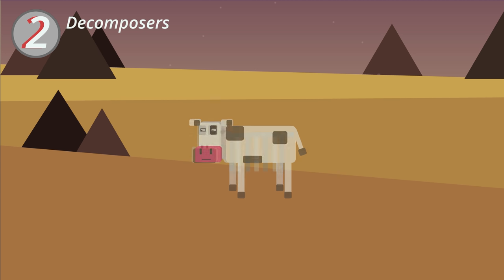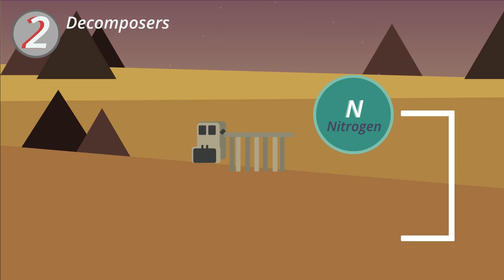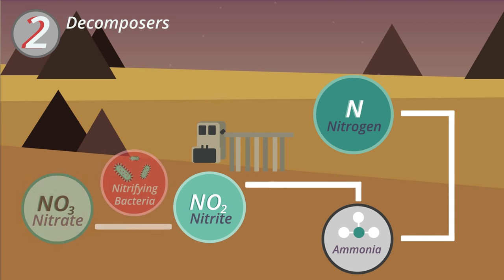Secondly, decomposers in the soils break down animal excretion and dead organisms, returning nitrogen back to the soil as ammonia. The ammonia turns firstly into nitrite, and then nitrifying bacteria in the soils turns the nitrite into nitrate.